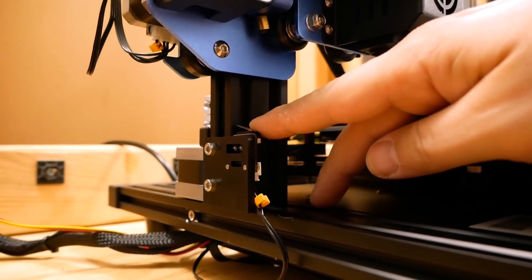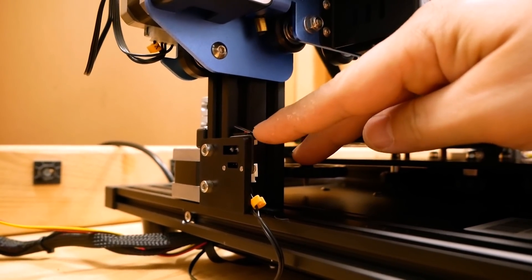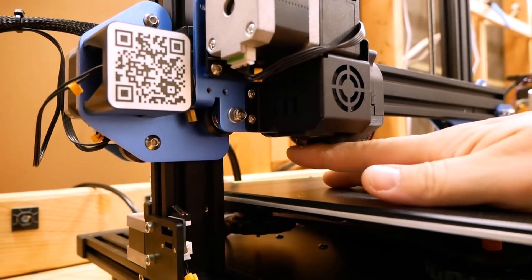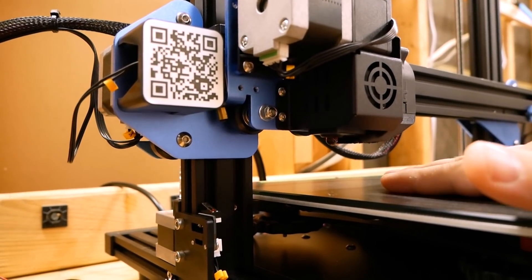Here's the z-axis limit switch and it controls how far down the gantry is allowed to go. And of course the purpose of the z-axis limit switch is to prevent the nozzle from crashing into the bed and damaging your nice glass bed surface.